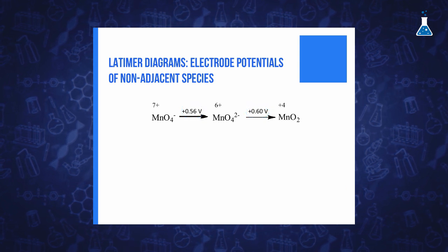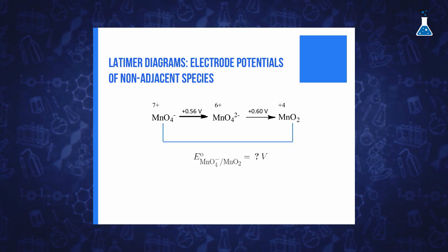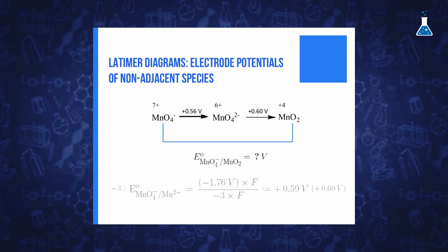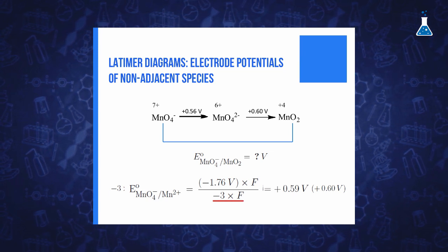And then we can easily know the reduction potential for the non-adjacent couple, permanganate and manganese dioxide, by dividing the sum of the variation of free energies by minus 3F.